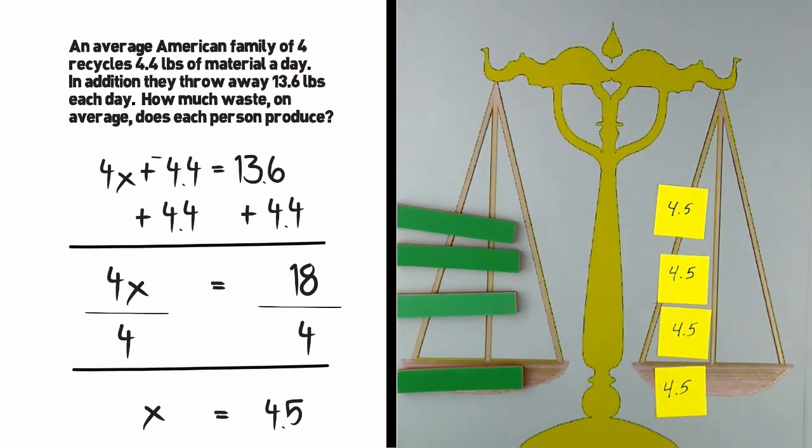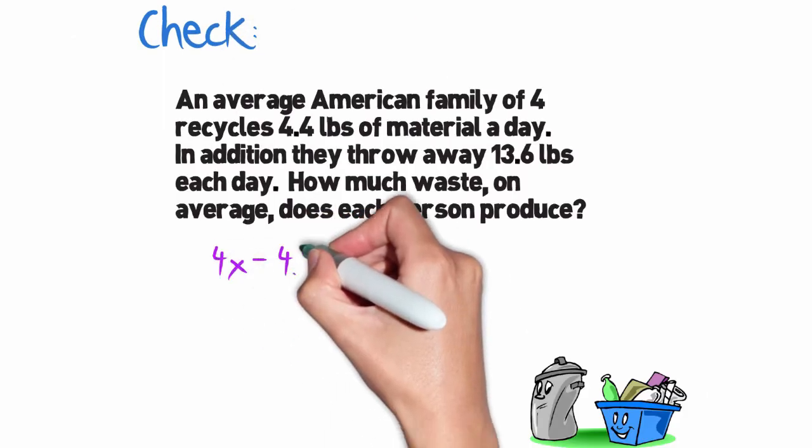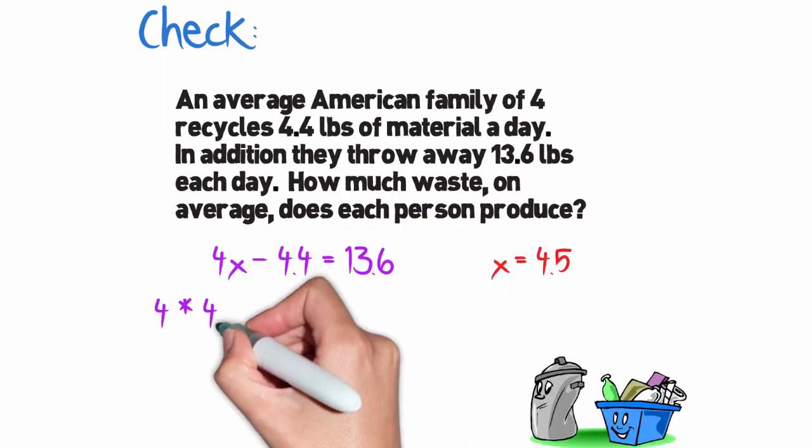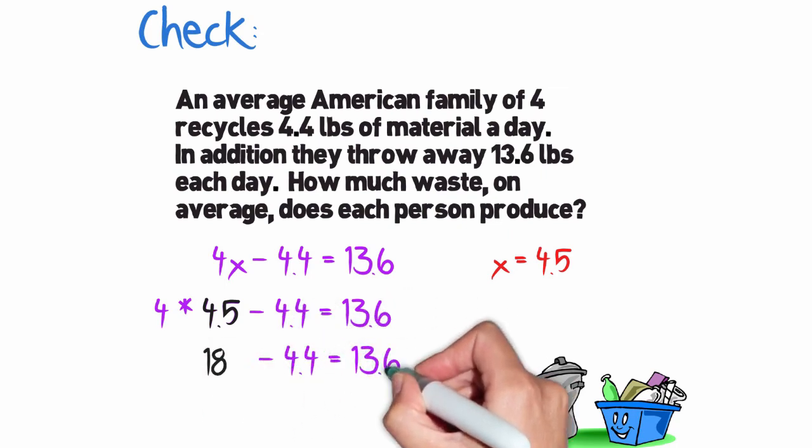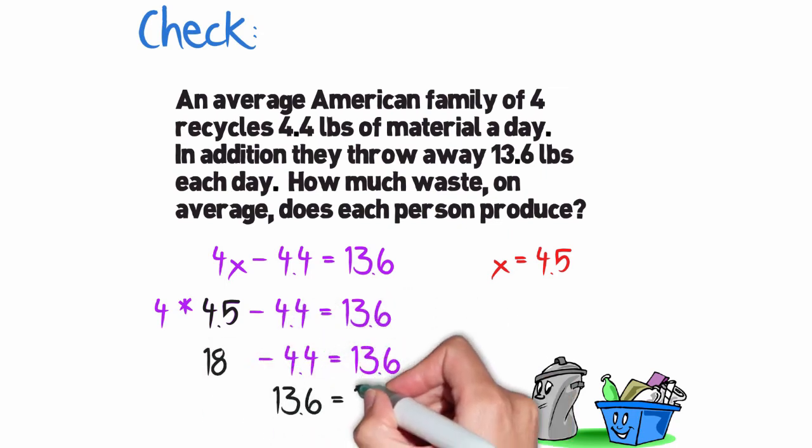We are not done yet. We need to go and check the equation. We will be substituting the 4.5 for x. 4 times 4.5 is 18. And when we subtract 4.4, we get 13.6. You can notice that both sides of the equation are equal, so the problem checks.